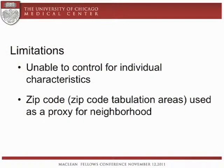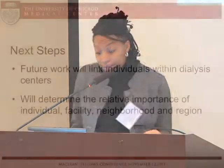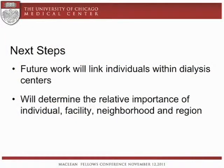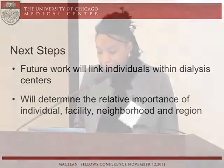This work has some limitations. In this analysis, we were unable to control for individual characteristics. We also used zip code tabulation areas as a proxy for neighborhood, with the thought that people dialyze close to where they live and that this was a reasonable approximation of access. Future work will link individuals within dialysis centers so that we can control for individual characteristics as well as facility and area, and we'll determine the relative importance of these various levels: individual, facility, neighborhood, and region.